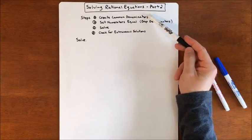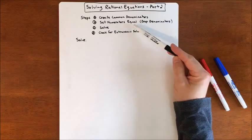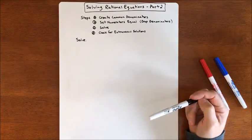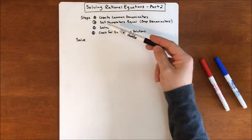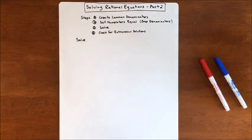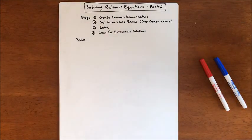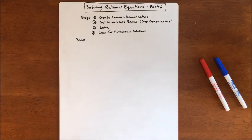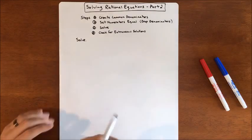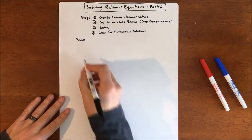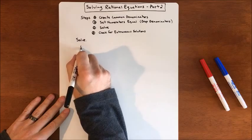Once we have our common denominators, we're going to drop the denominators and set the numerators equal to each other. We're going to solve, and we're going to double check that our solutions — there's even potential for our solutions to work. So here's what our next problem will look like.